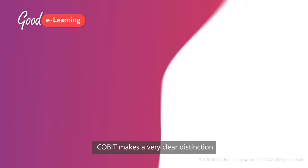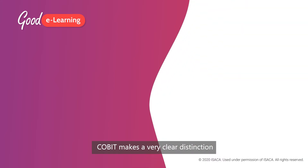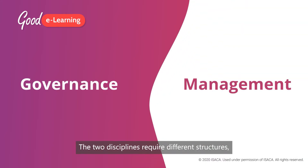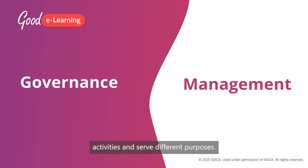COBIT makes a very clear distinction between governance and management. The two disciplines require different structures, activities, and serve different purposes.